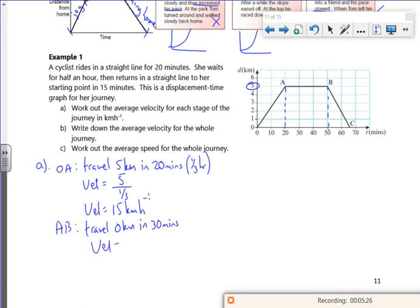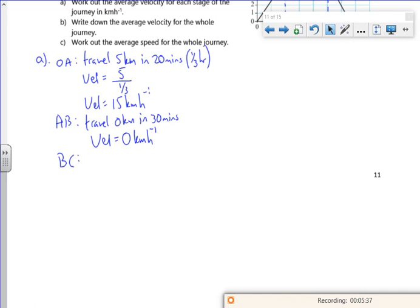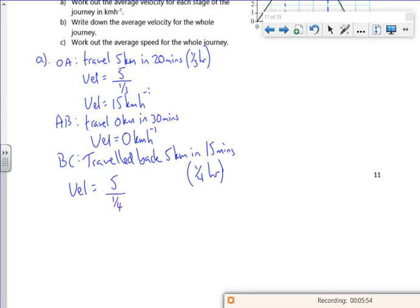So my velocity is 0 km in half an hour. And then from B to C, I've travelled back five kilometers. And that's in 15 minutes or a quarter of an hour. So my velocity for this one is five kilometers over a quarter. My velocity is 20 kmh to the minus one. But I've got to be careful, because I'm travelling back, and velocity is a vector. So I've got to put the minus in there to show that I'm travelling back. There. So those are my velocities for each section.